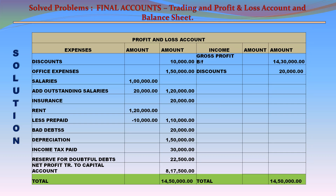Profit and Loss Account. On the credit side: gross profit brought forward from trading account 14,30,000. Discounts received: 20,000. Total income: 14,50,000. On the debit side: discounts 10,000; office expenses 1,50,000; salaries 1,00,000 plus outstanding salaries 20,000 equals total salaries 1,20,000; insurance 20,000; rent 1,20,000 less prepaid 10,000 equals net rent 1,10,000; bad debts 20,000; depreciation 1,50,000; income tax paid 30,000; reserve for doubtful debts 22,500. Net profit transferred to capital account: 8,17,500. Total expenses: 14,50,000.